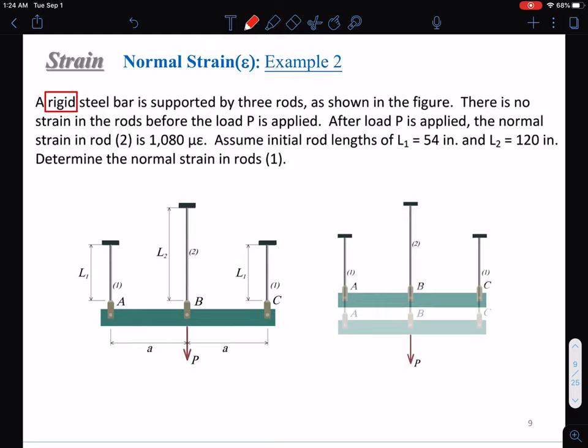In this system, you are given the normal strain of rod two and requested to calculate the normal strain in rod one. Let's analyze this system first. This bar, steel bar ABC shown in green, is rigid.